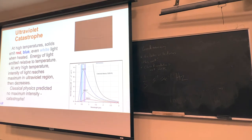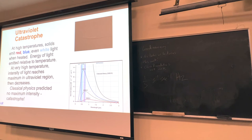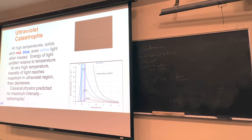Black body radiation was a phenomenon people saw that scientists didn't understand — they called it the ultraviolet catastrophe. When an object heats up you see lots of different colors: first red, then blue, then white hot. The intensity of light reaches a maximum in the ultraviolet and then drops off. They thought that as you kept increasing temperature you'd just have higher and higher intensity, but they never saw the expected behavior — it wasn't following classical physics.